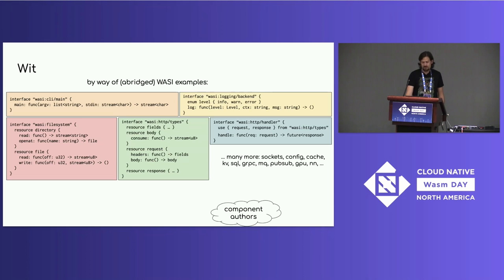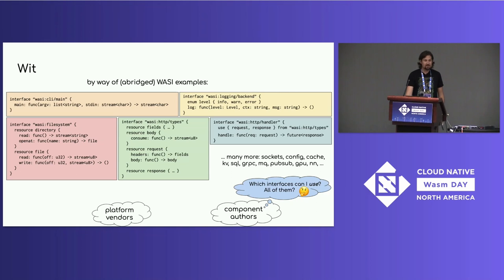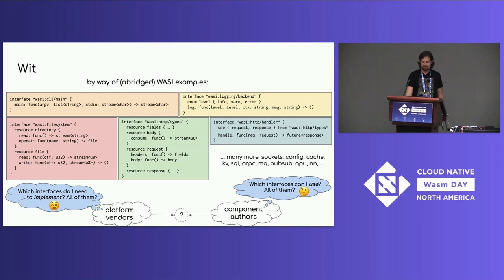From a component author's perspective, which interfaces can I use? I'm a little skeptical that I'll get GPU or neural network hardware everywhere. And from a platform vendor's perspective: do I have to implement all these interfaces? That's a much scarier proposition because there are a lot of them, they're going to be growing over time, and it's not even possible to implement them all everywhere. So we're missing one more thing to link these together — and that thing is being actively worked on. It's called worlds.